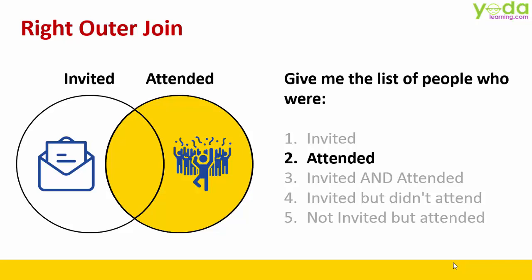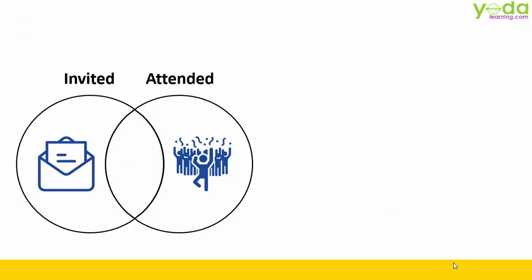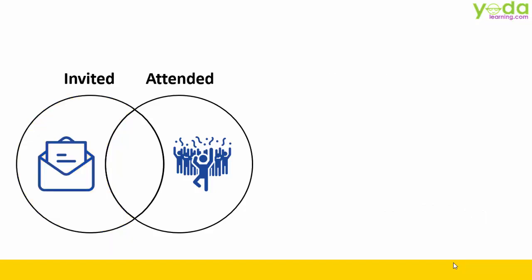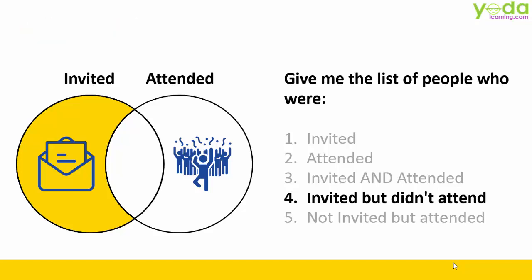Let me move on to talk about that group of people who were invited and attended the program. This is what we refer to as Inner Join. Now, if I wish to talk about those people who were invited but did not attend — they were too busy in their work, they could not find time for your party and somehow could not make it — this is what we refer to as Left Anti Join.